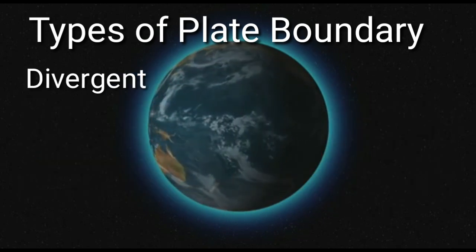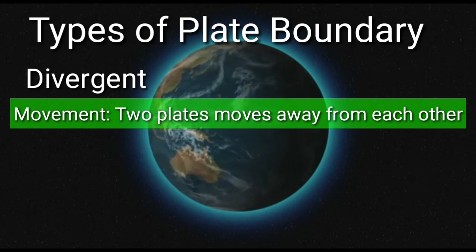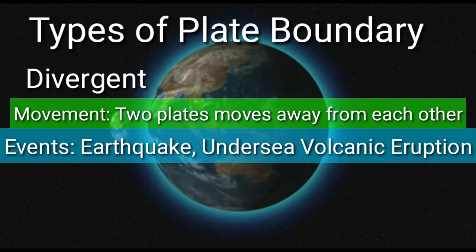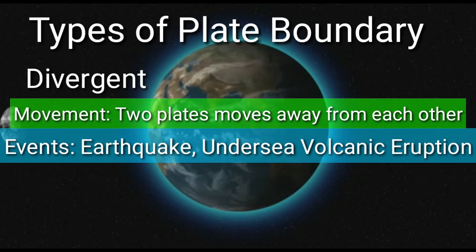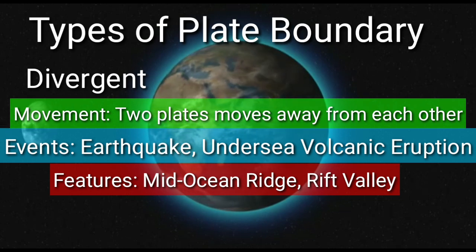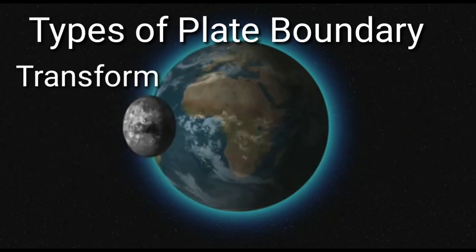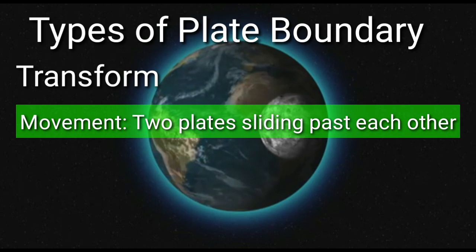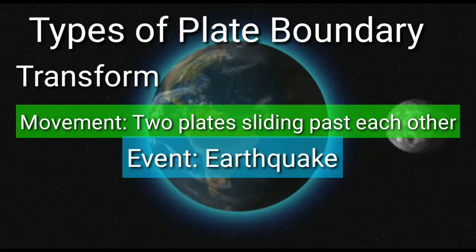In divergent boundary, the two plates move away from each other. The geological events are earthquake and undersea volcanic eruption, while the geological features are mid-ocean ridge and rift valley. In transform fault boundary, the two plates slide past each other, and the geological event is earthquake.